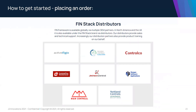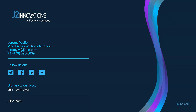For placing an order and getting started with Finstack and the F200, we have distributors across North America: Active Logics, Building Controls and Solutions, Control Code, Jackson Control, Morgan Software Applications, M&M Control, and Yorkland Controls. In the UK, we have Controls Plus Solutions Ltd. Reach out to any of these distributors — they're capable of handling your requests and many can handle technical questions as well, or you can reach out to our support team. You can also reach out to me directly. I'm Jeremy Wolf, Vice President of Sales for the Americas. My email is jeremyw@j2inn.com and my mobile number is 470-390-6839.